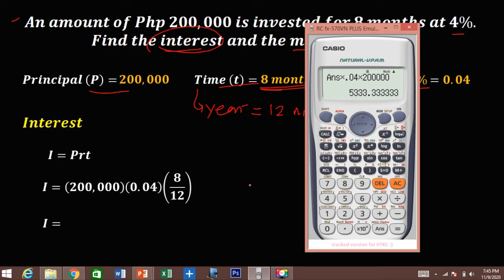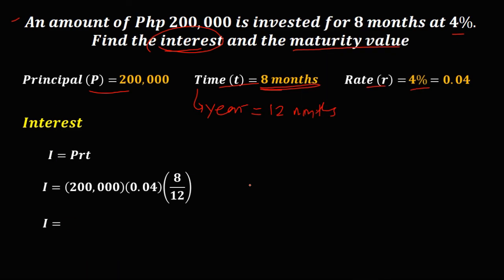Five thousand three hundred thirty-three point thirty-three. So this is the interest.